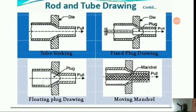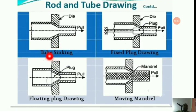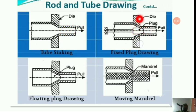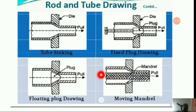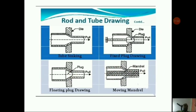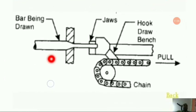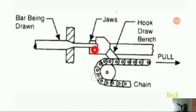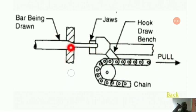In rod and tube drawing: tube sinking shows the die being used to reduce the diameter of the tube. Fixed plug drawing uses a plug placed inside the tube between the dies. The floating plug and moving mandrel can move to produce the tube. Bar drawing uses a jaw attached to a hook draw bench with a chain to pull the wire through the die orifice.